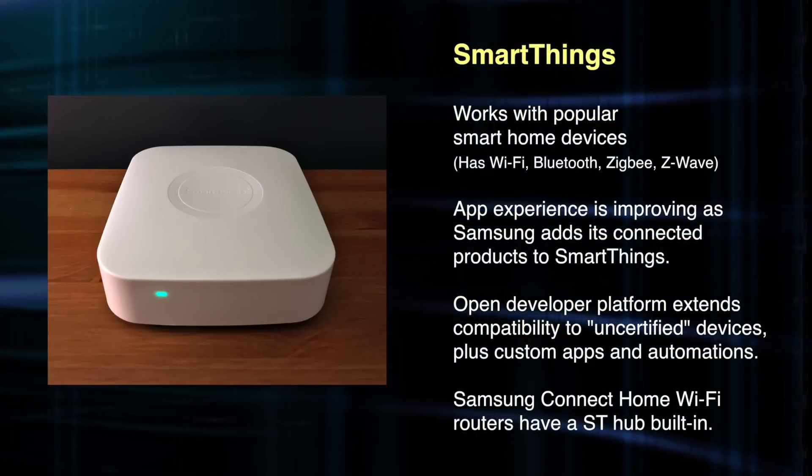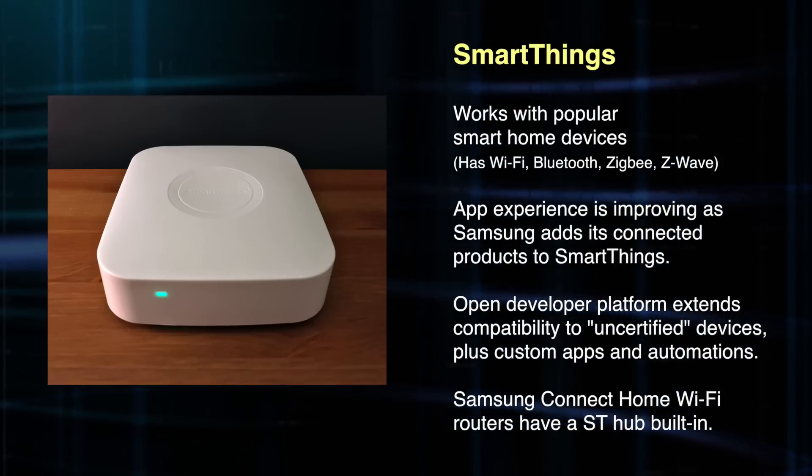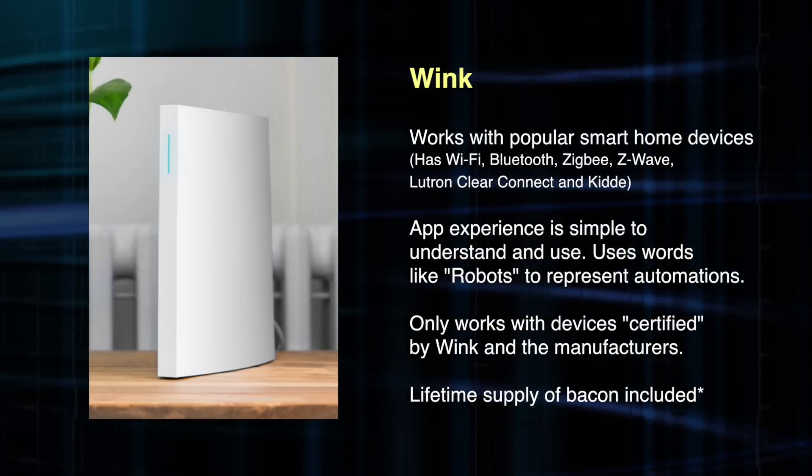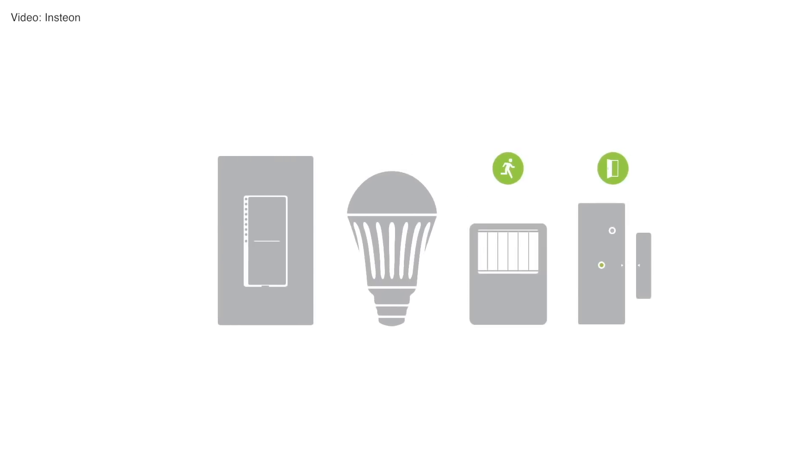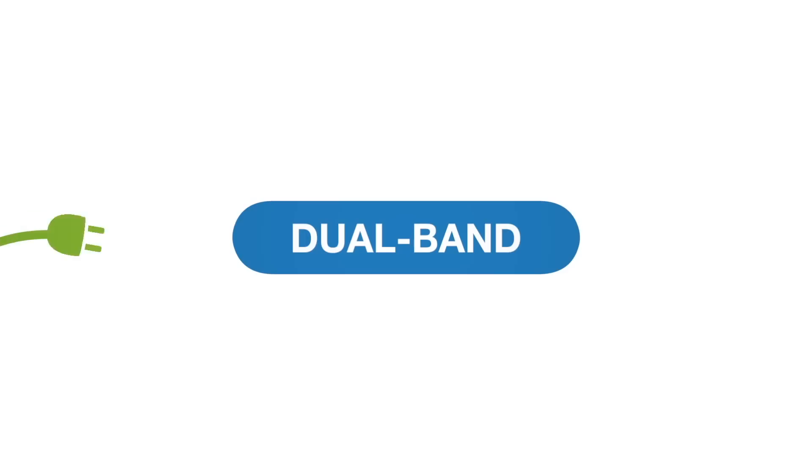SmartThings is ultimately for more of a power user who wants to do more with their devices and have more variety of them. With Wink it's a little bit simpler — simpler to understand, simpler to set up, and they call their automations "robots," which is a cute name. Each platform also tends to make their own products that work well with their hub — things like sensors, switches, dimmers, and plug-in modules. Insteon tends to make the most of these devices; they make the technology, the proprietary Insteon radio, their own hubs, and their own hardware interfaces. Wink and SmartThings also make a handful of their own products and of course their hub.